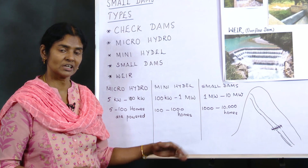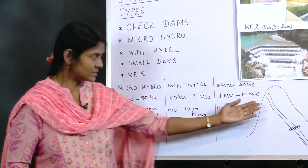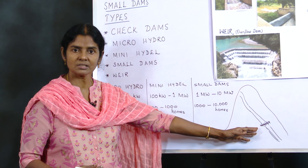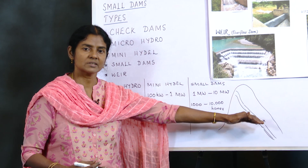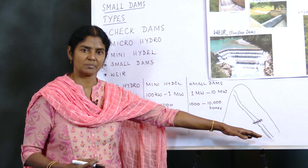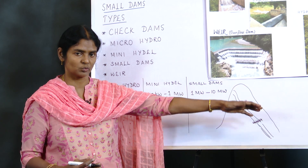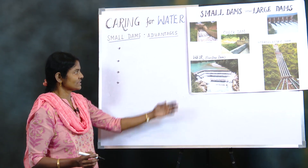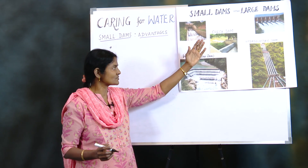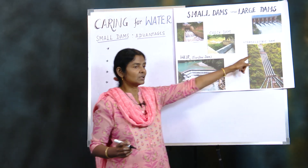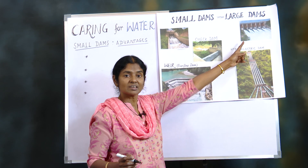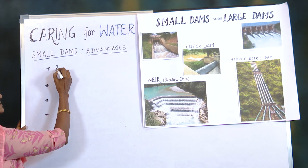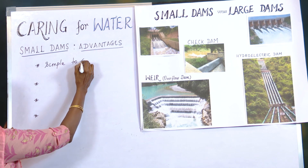Now let's look at the advantages of these small dams. There is also the run-of-river system, where whatever runs off from the river is converted into hydroelectric power - the water falls on a turbine and keeps it moving. Now coming to advantages: small dams are very simple to construct and very easy to build.